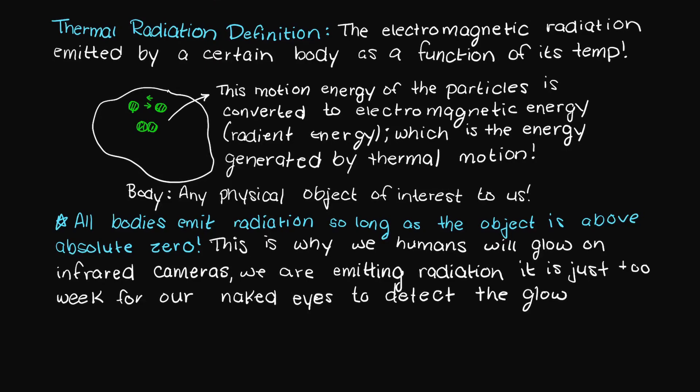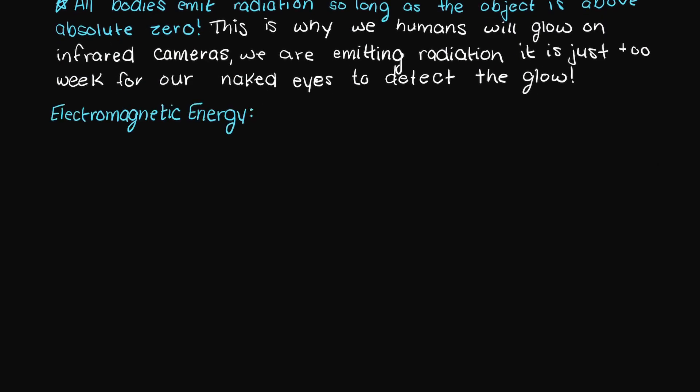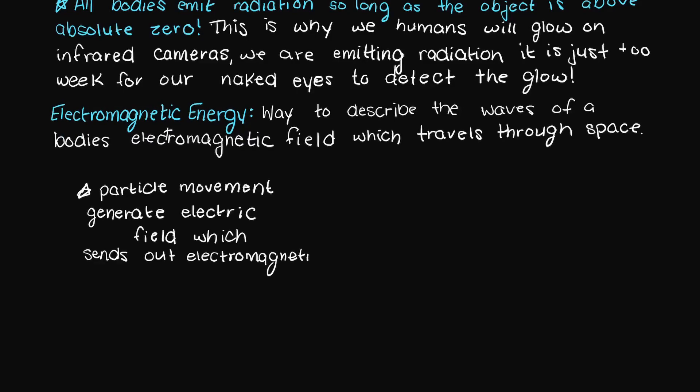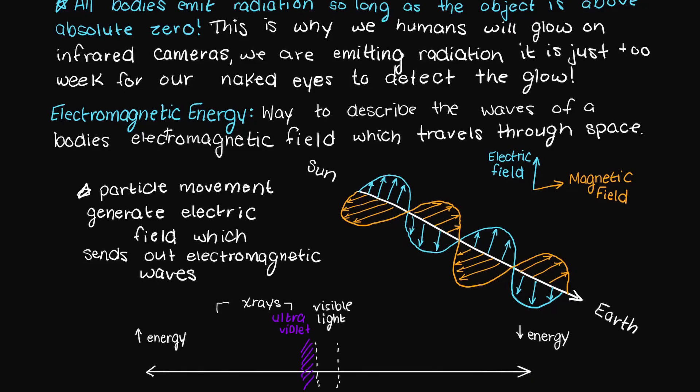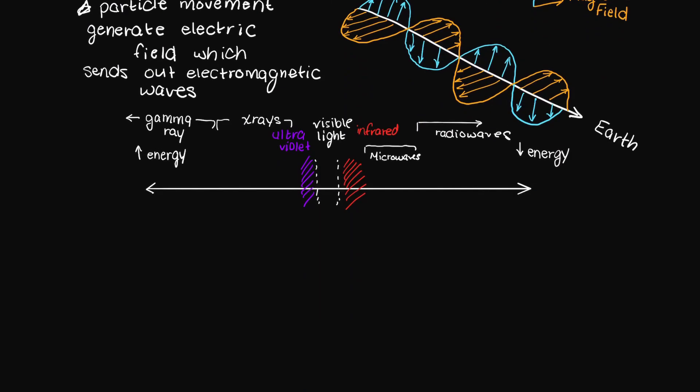So we should also give a broad description of electromagnetic energy as well since we are using this term so frequently. Electromagnetic radiation is a term used to describe the waves of a body's electromagnetic field which travel through space. And you've likely heard of some of these before, they include radio waves, x-rays, ultraviolet rays, infrared, visible, and gamma rays.